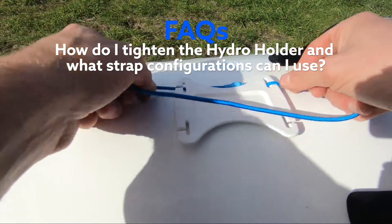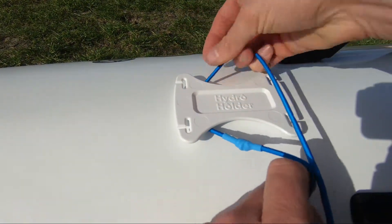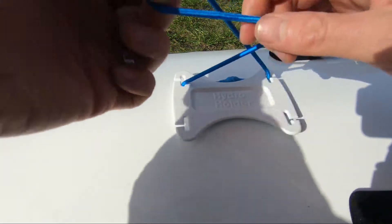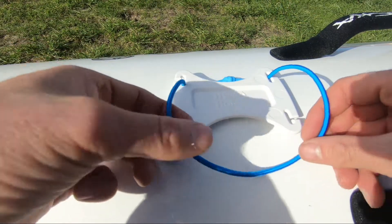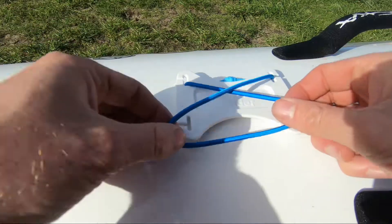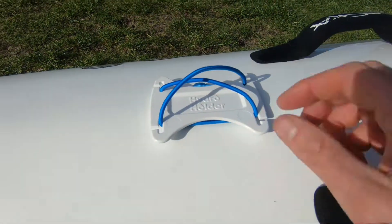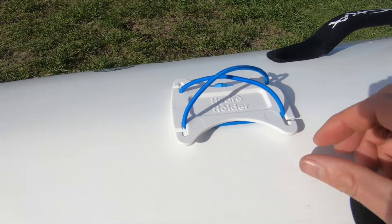You can put the strap underneath that way, or it can fit underneath that way. So the most common configuration I use is to have it under each side and then I cross over and have it in like that. I find that holds the water bottle really nicely.